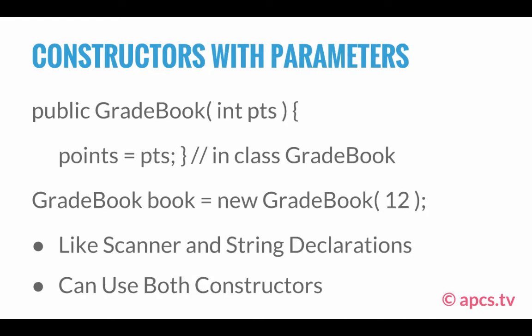Now let's take a look at constructors with parameters. We have: public GradeBook(int pts). pts is supposed to represent points, and we know this is a parameter because it's within the parentheses, and this parameter is of integer type. This is another constructor — again named GradeBook because the class name is GradeBook. What it's doing is setting the value of the private instance variable points to the value of pts. pts is a parameter that the user will define when calling this constructor method.